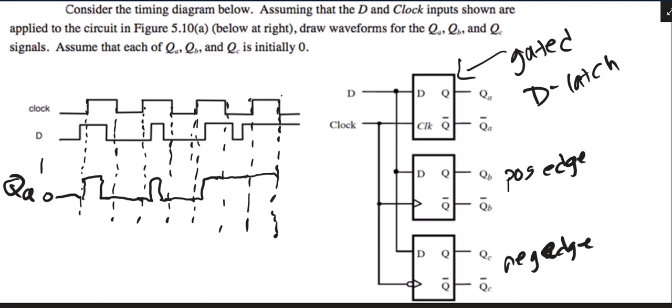So now we want the positive edge trigger. So I'm going to just extend down the lines for the positive edge of the clock. This is QB, starts at 0. So now when we get to the positive edge of the clock, you look and see what D is, and D is 1. So it becomes 1, and it stays 1 all the way until the next positive edge.